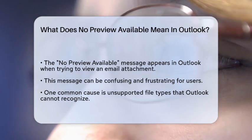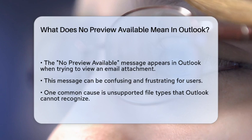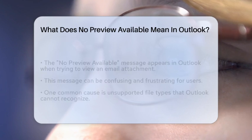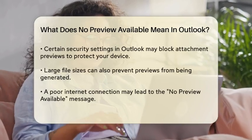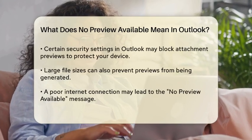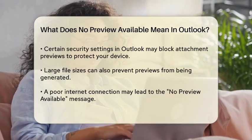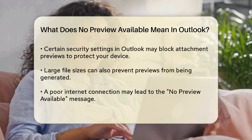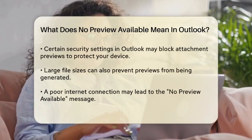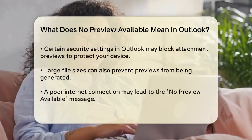The 'No Preview Available' message typically appears when you attempt to view an attachment or a file within an email. This can happen for several reasons. One common reason is that the file type is not supported by Outlook. For instance, if you receive a file format that Outlook does not recognize, it will not be able to generate a preview for you.